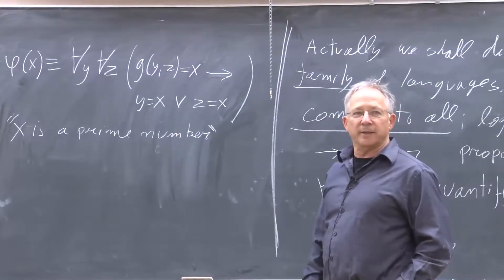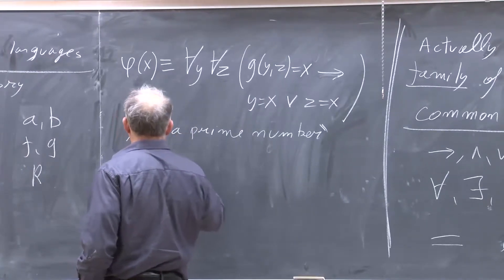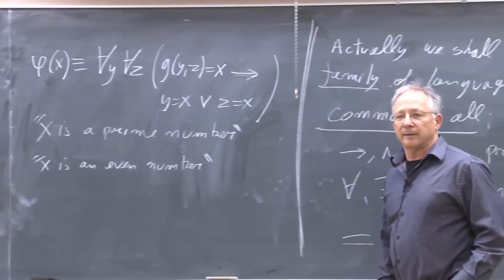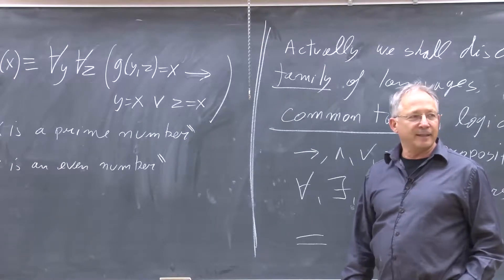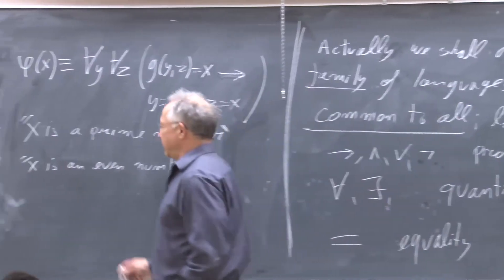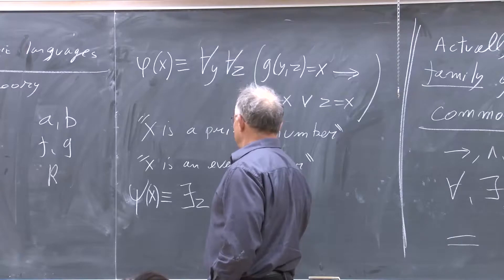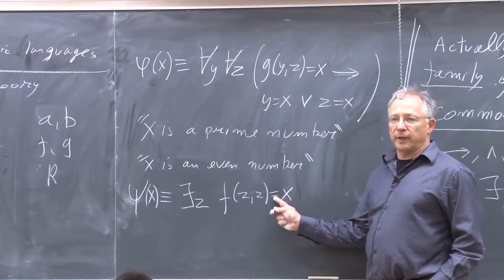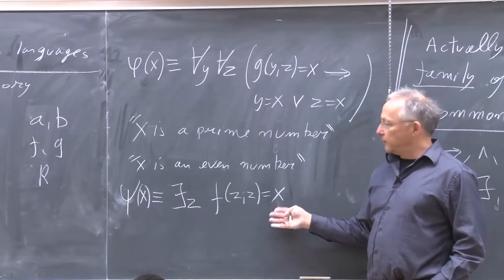Can you say 'x is an even number'? That's a bit harder. So: there exists a z such that f(z, z) equals x. I can say psi of x will be: there exists z such that f(z, z) equals x. I'm using equality freely, and my interpretation says f is addition. So this says x is an even number.